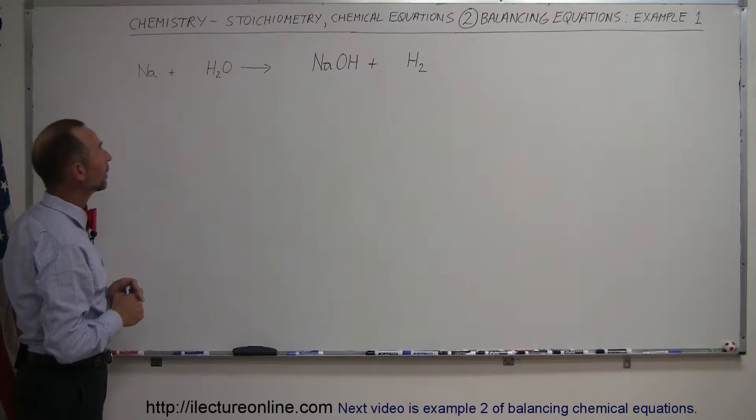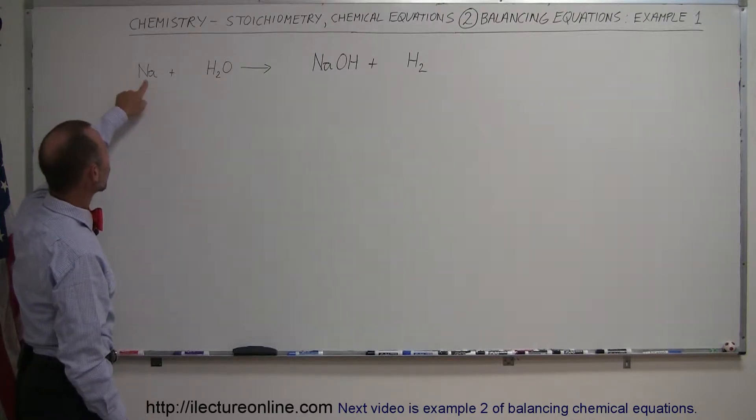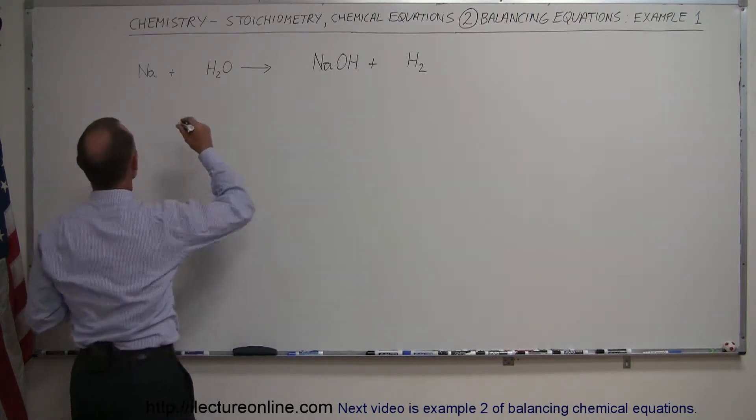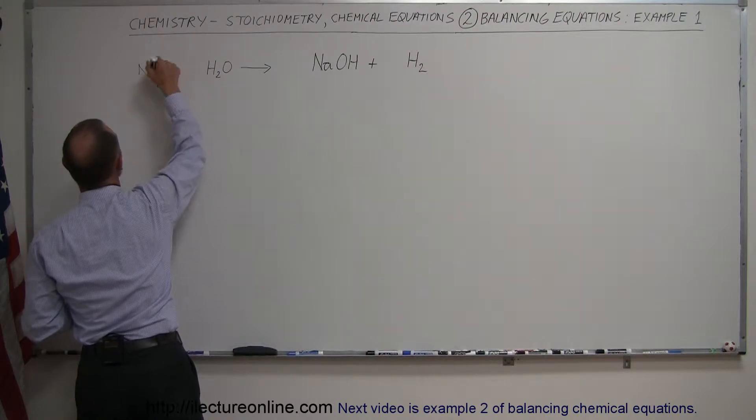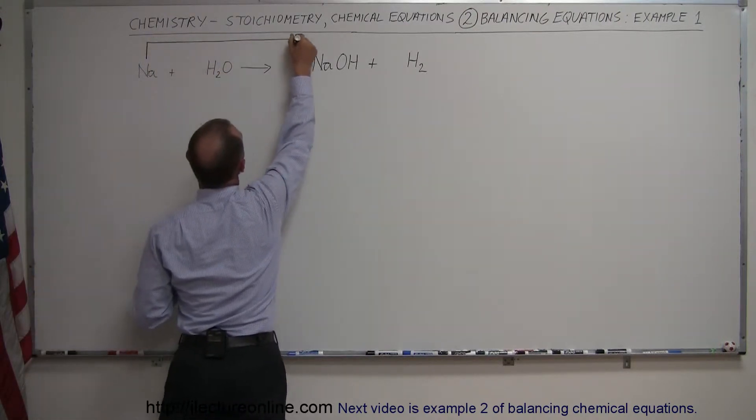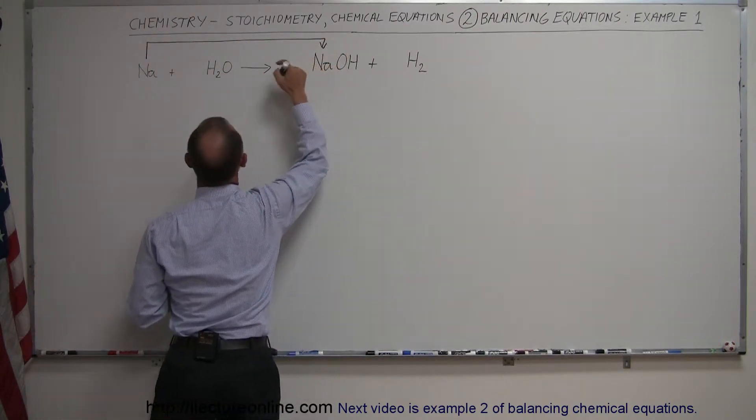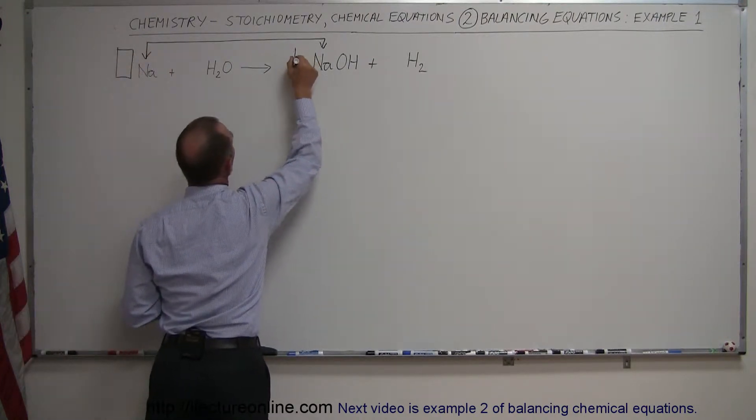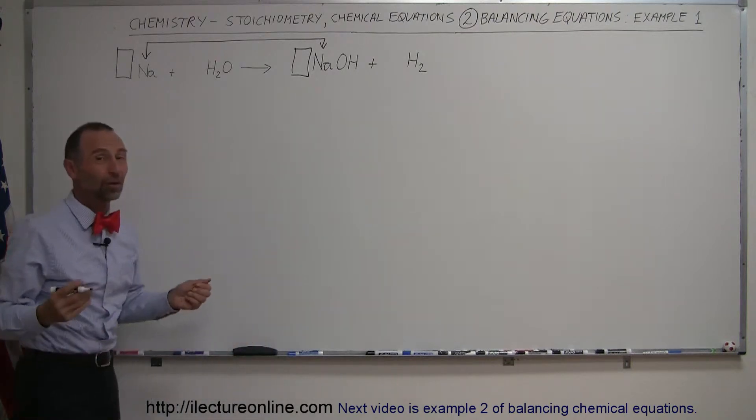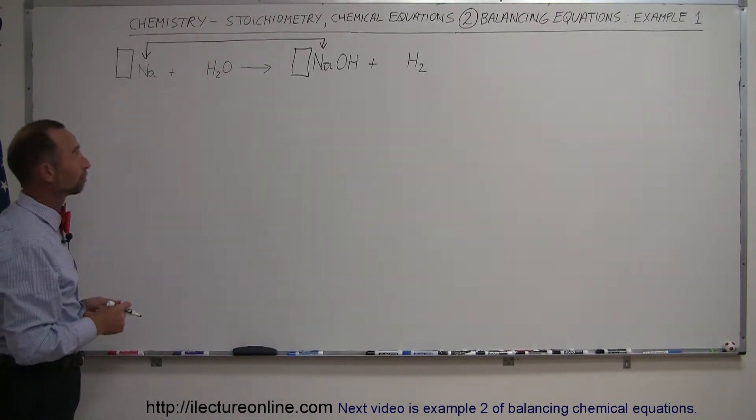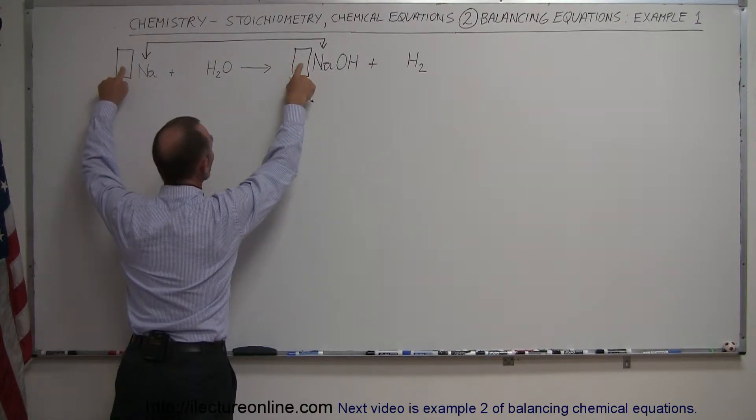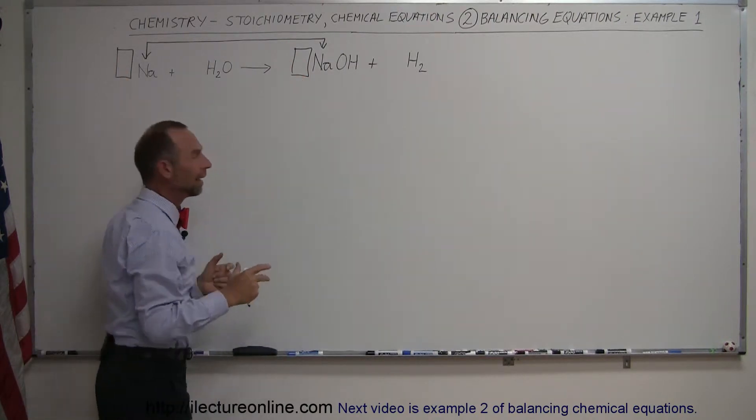So where do you want to start? Well, notice that we have sodium only appearing once on the left side of the equation and sodium only appearing once on the right side of the equation. Which means that whatever we have here, the number in front of that must equal the number in front of here. So we know that those two numbers must be the same, whatever they are. Otherwise sodium will never be balanced because those are the only places sodium appears.